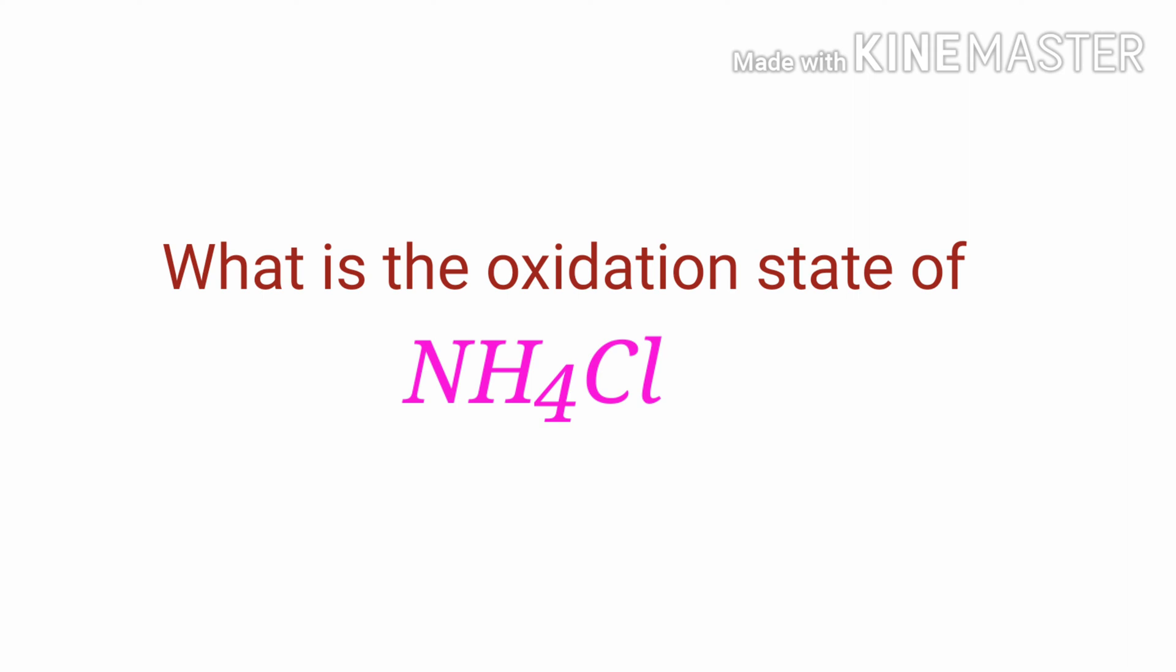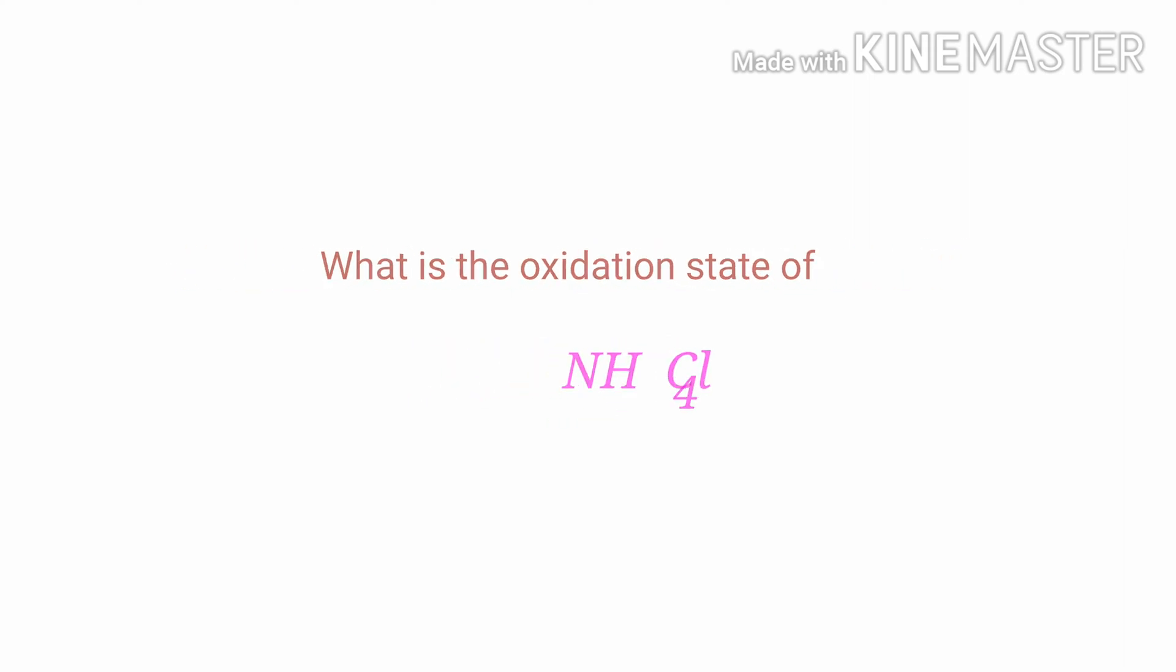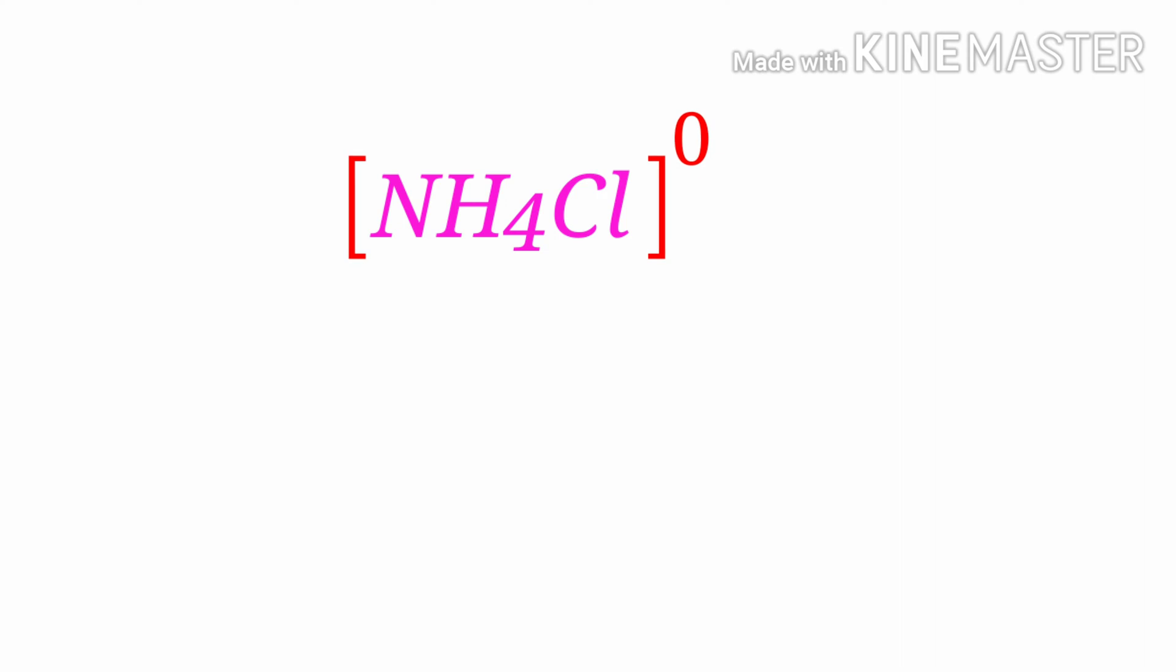What is the oxidation state of ammonium chloride? Ammonium chloride is a neutral compound with overall oxidation number zero. Therefore, we know that the sum of the oxidation number of the atoms is equal to zero.